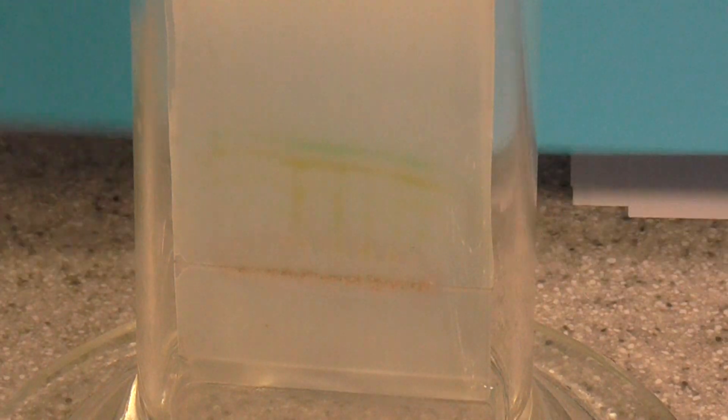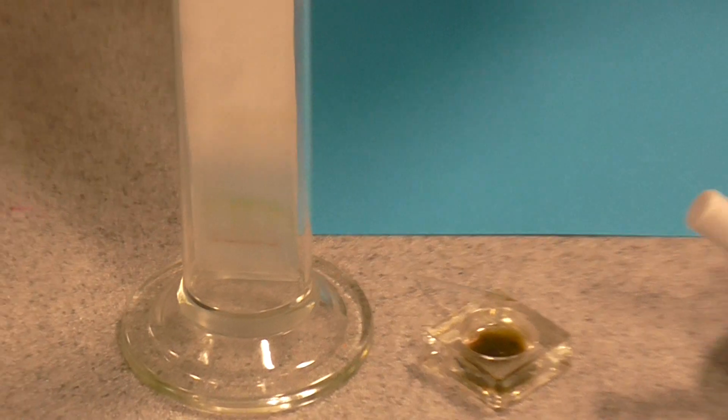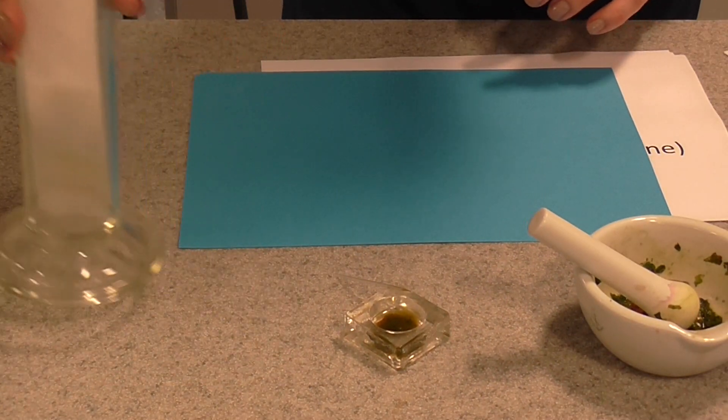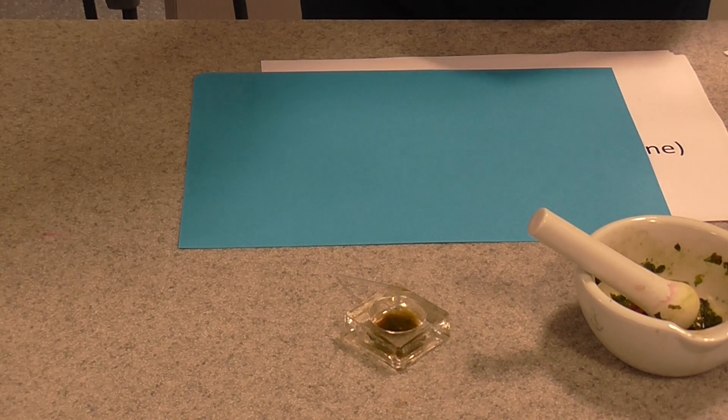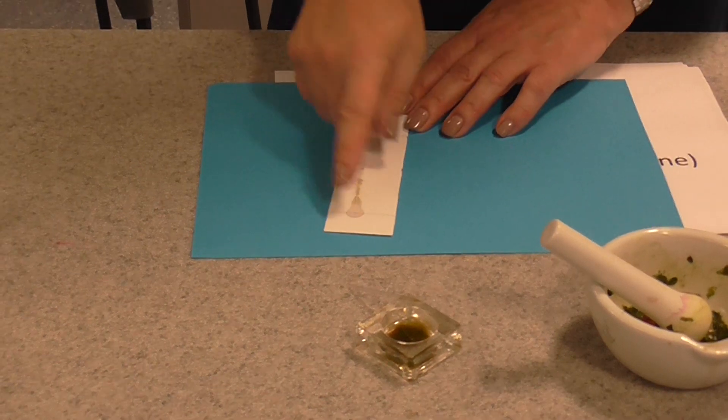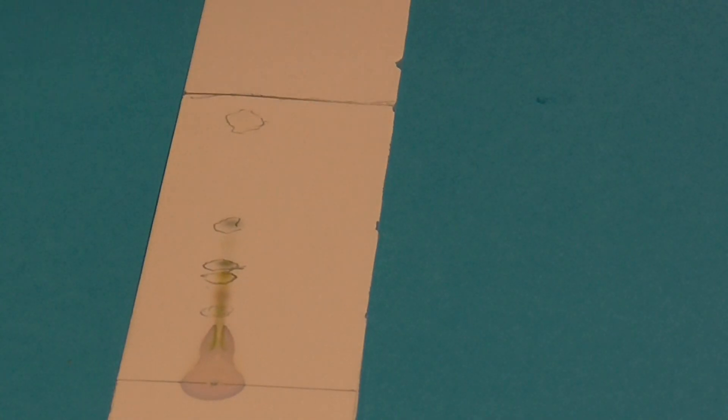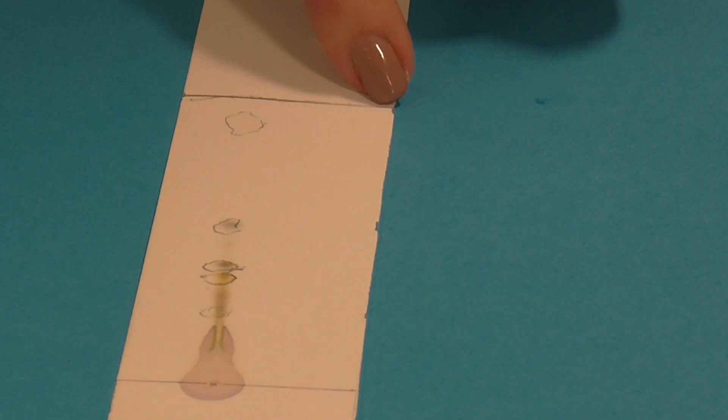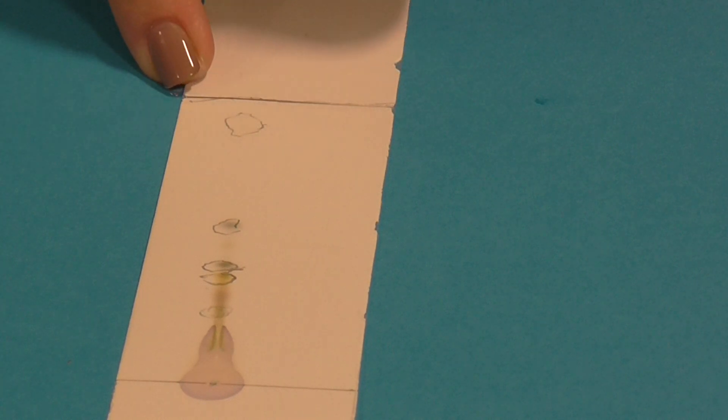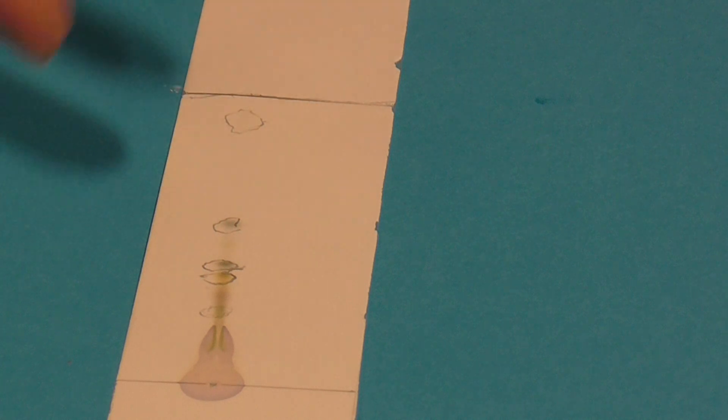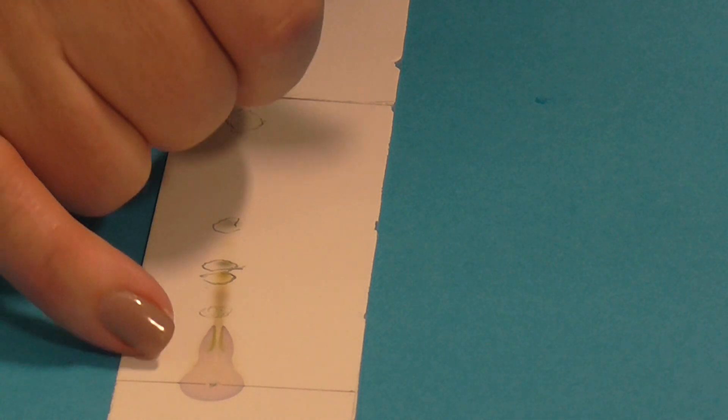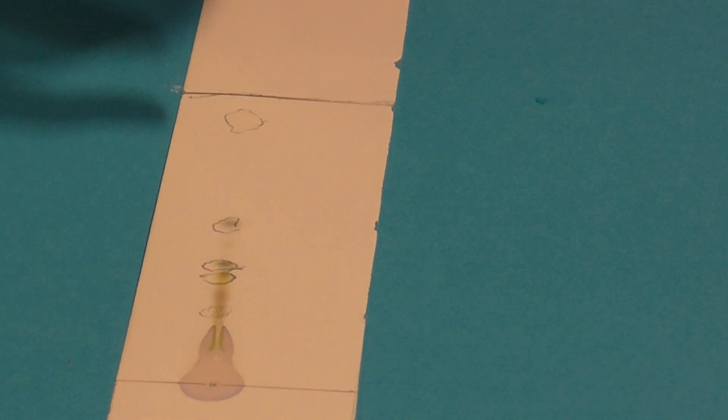When it gets near the top of the paper, you need to remove the TLC strip from there. This is the kind of thing you'll see. As soon as you remove it, get your pencil and you need to mark the solvent front, the point that the solvent's reached. Then you need to leave this to dry and let it dry naturally. Often you're told to use a hair dryer or put it in a warm place, but actually I find that makes the pigment spots fade.